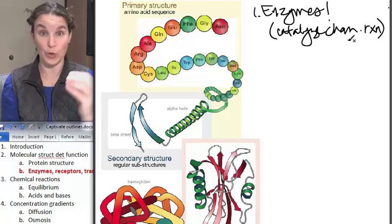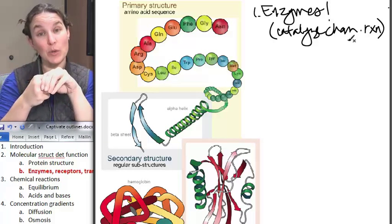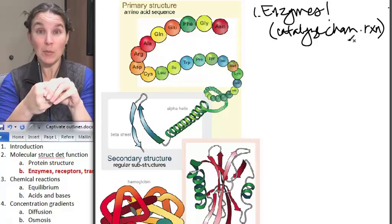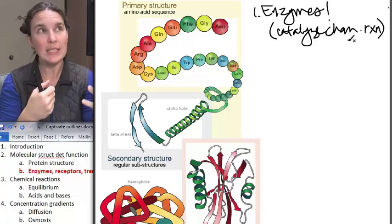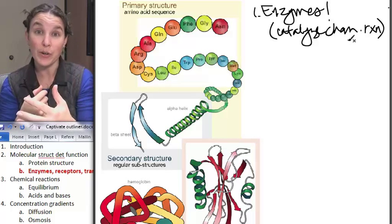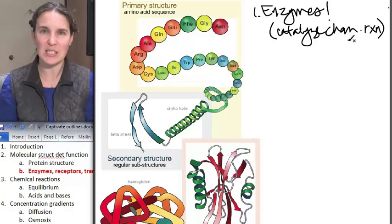So a protein has a shape. A molecule comes in and binds to that protein, and a chemical reaction takes place because it bound to the enzyme. Enzymes often are required for chemical reactions to take place in living systems.